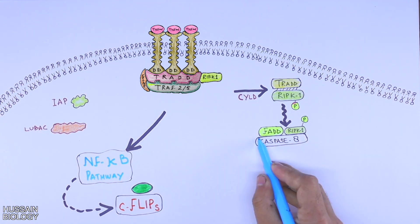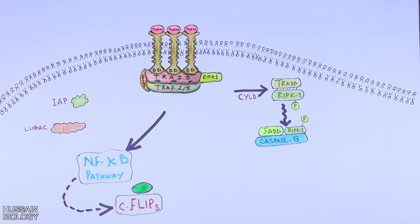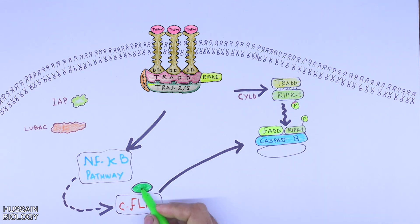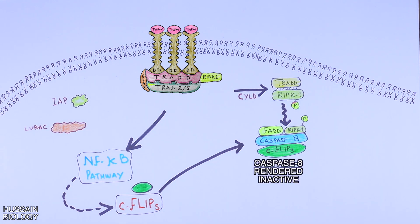In the next step, the FADD-RIPK1 complex recruits caspase 8 molecule. It can lead to apoptosis from here if caspase remains active. But to prevent the caspase cascade, we need to deactivate or inhibit the caspase 8 molecule, and it's done by CFlip S molecule. From the NFKB pathway we got CFlip S, which forms a dimer with caspase 8 and renders it inactive, thereby inhibiting apoptosis. But it must be noted that if CFlip S does not inactivate caspase 8, higher levels of RIPK3 molecule render caspase 8 inactive, which we are going to see later.